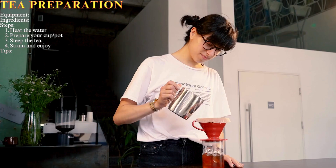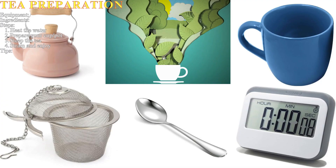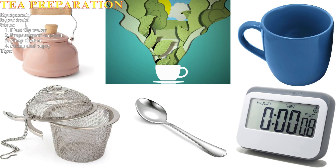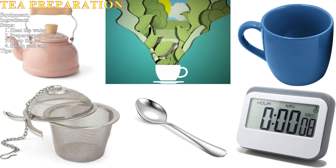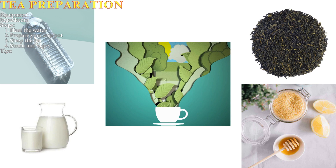Here is a basic guide to preparing tea. Equipment needed: a tea kettle, a mug or teapot, a strainer or infuser (optional, for loose leaf tea), a spoon, and a timer (optional). Ingredients: water, tea leaves (loose leaf or tea bags), and optional additives such as milk, honey, sugar, or lemon.